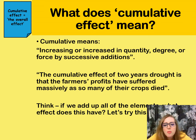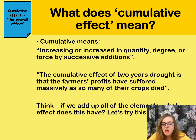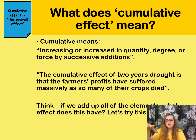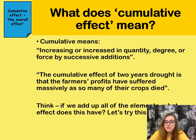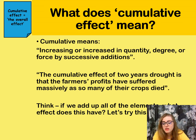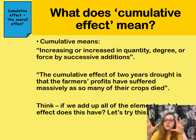Let's have a look at this example: 'The cumulative effect of two years of drought is that the farmers' profits have suffered massively as so many of their crops died.' Basically, the overall effect of this drought is that their profits have suffered. So all it means is 'overall effect.' Now let's translate that to English — we're going to look at multiple words, put them together, and talk about the overall effect.